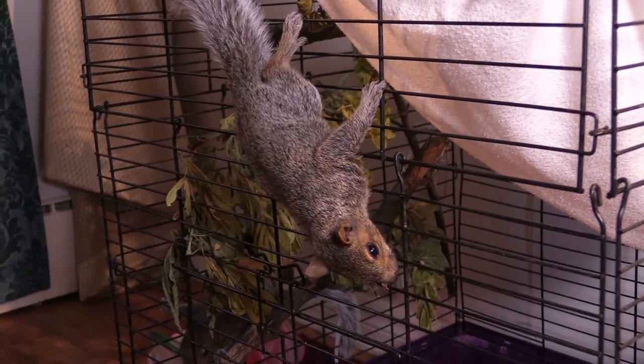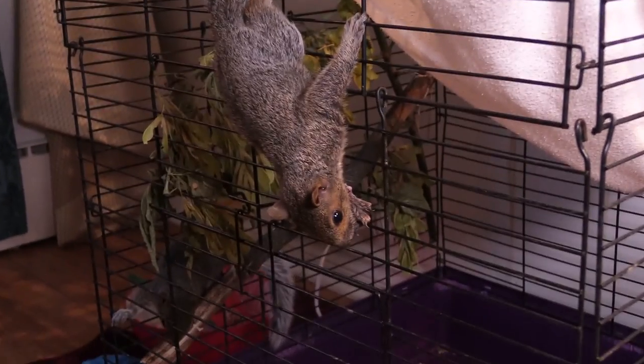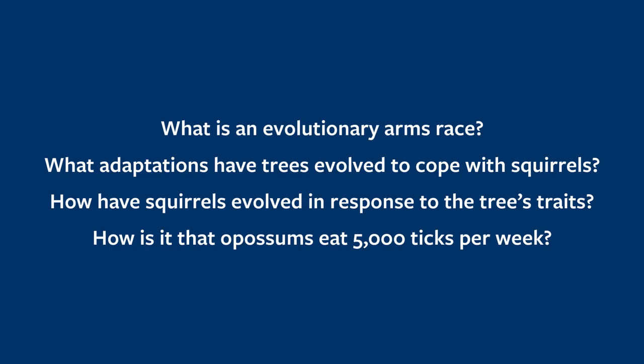It inspired this whole animation. So I wanted to create this video to talk a little more about the battle between squirrels and trees, and also to address an issue about possums in my video. We're going to ask: first of all, what is an evolutionary arms race? What adaptations have trees evolved to cope with squirrels and to actually control squirrel populations? How have squirrels evolved in response to the trees' traits? And then finally, how is it that possums eat 5,000 ticks per week during tick season? This is a claim that sounds crazy — that's over 700 ticks per day — and it seems crazy that one animal could eat 700 of another, no matter how small, because it just takes a long time to hunt another organism.